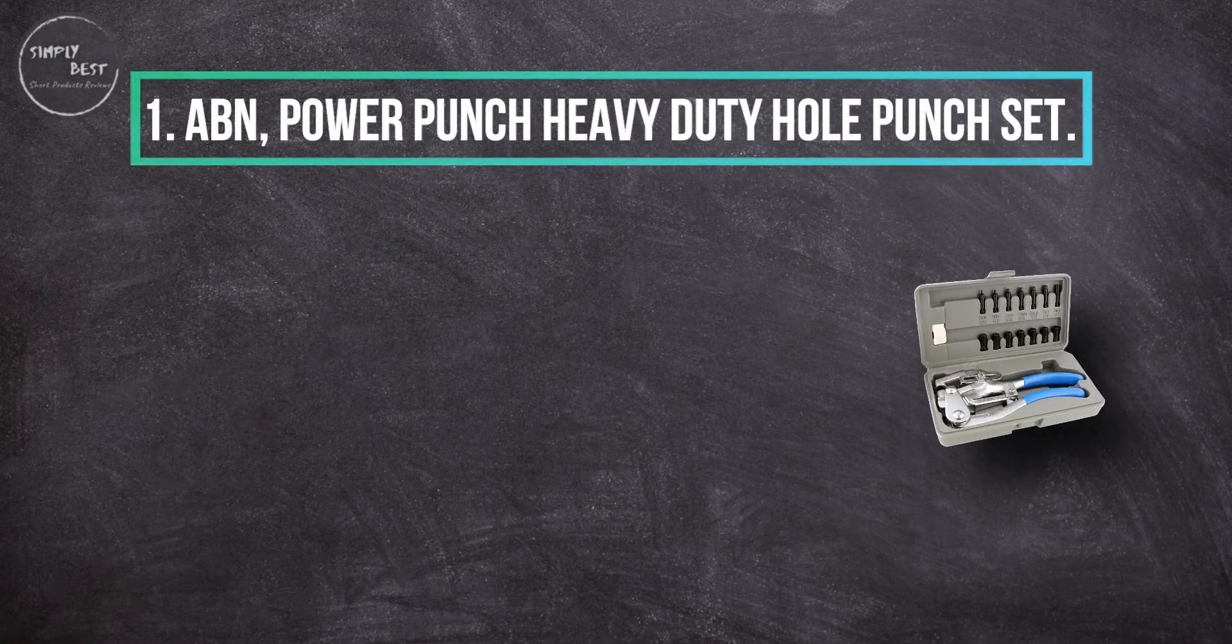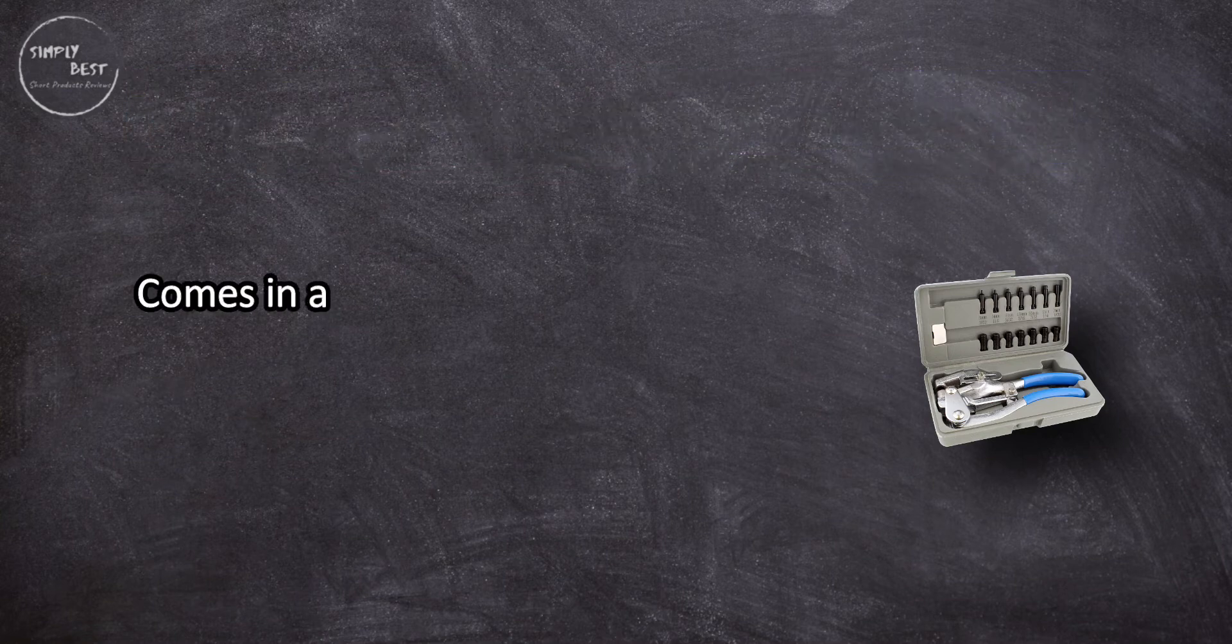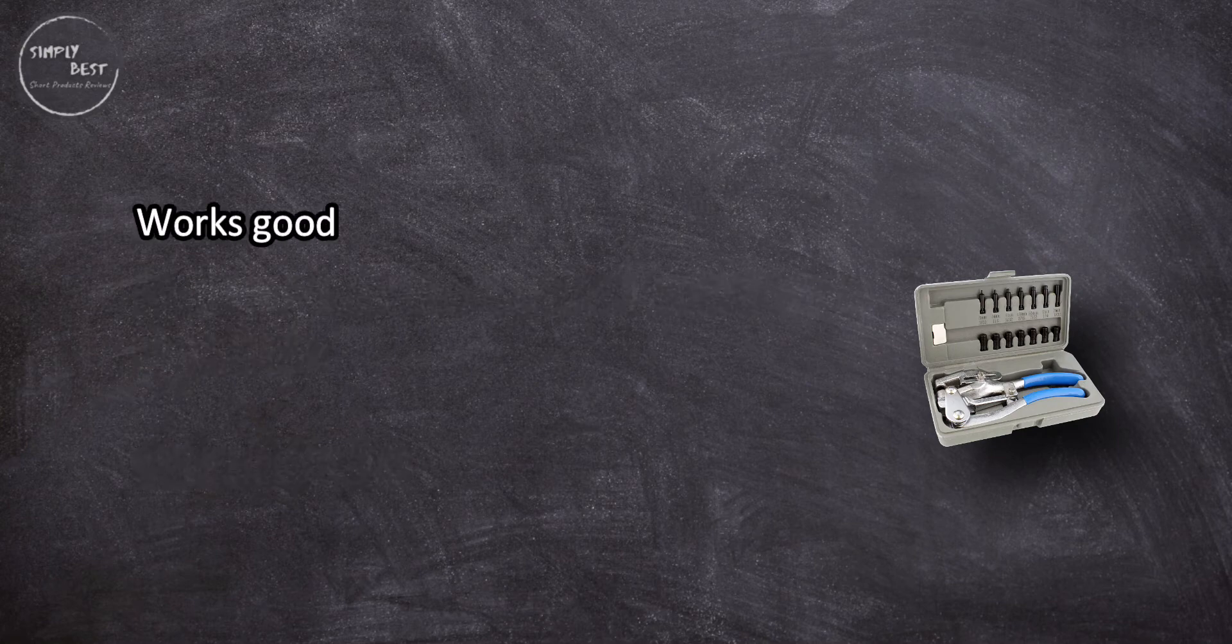At number one, ABN Power Punch Heavy Duty Hole Punch Set. Comes in a nice storage box, can create a deep hole. Seven sizes of holes, works good for belt leather but can also punch through sheet metal and brass.